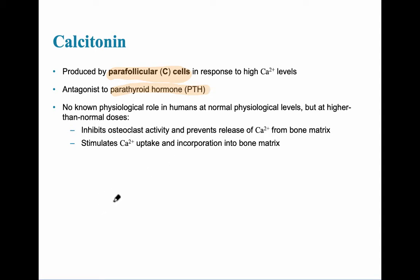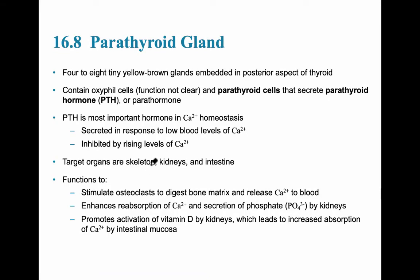Calcitonin lowers blood calcium levels by stimulating calcium uptake into bone. For the parathyroid gland, the most important hormone for calcium regulation is parathyroid hormone, or parathormone (PTH). These yellow-brown glands are embedded in the posterior aspect of the thyroid gland. PTH is extremely important in calcium homeostasis — it is secreted in response to low blood calcium levels to raise calcium back to normal. The target organs are the skeleton, kidneys, and intestine, which are the three areas where calcium enters the bloodstream.